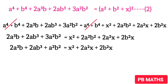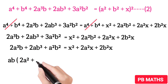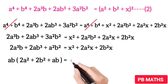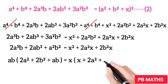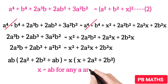Now, on the left-hand side we can factor out ab. Taking ab as a common factor gives us ab(2a² plus 2b² plus ab). On the right-hand side, factoring out x gives us x(x plus 2a² plus 2b²). Now let's compare the left-hand side and right-hand side. By comparing these expressions, it is clear that x equals ab for any a and b.